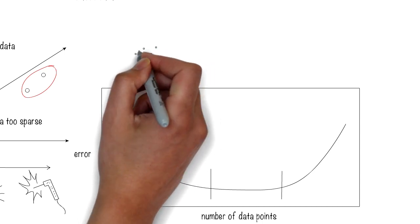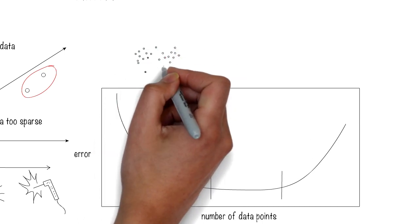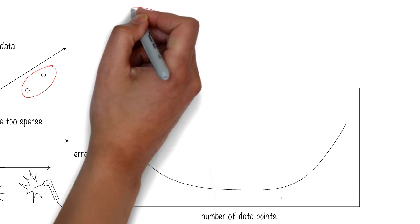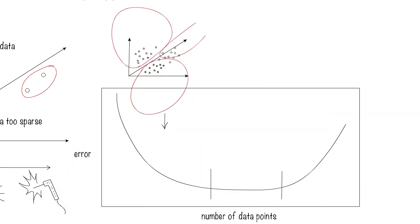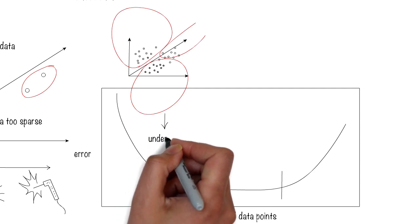If there are too few data points, or not having enough training, then the system will generalize too much, resulting in underfitting, and therefore high errors.